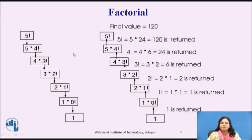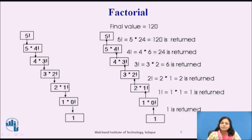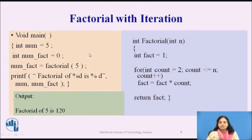Now, what is factorial and how do we calculate it? Here we can see that 5 factorial has a final value of 120. We have seen that if we know 4 factorial, we can directly multiply. So 4 factorial depends on 3 factorial, 3 factorial depends on 2 factorial, and 2 factorial depends on 1 factorial. We will see both programs — first for iteration and then for recursion.